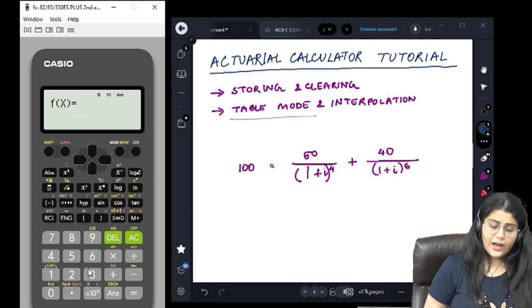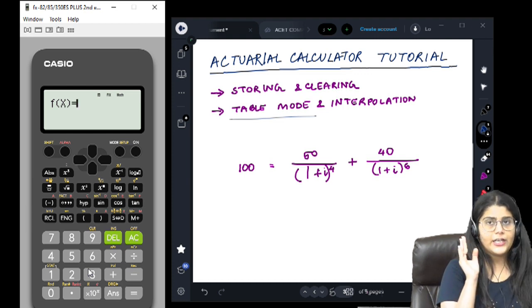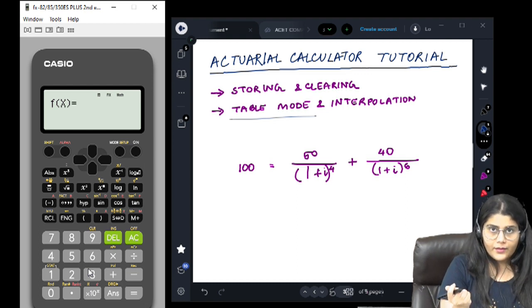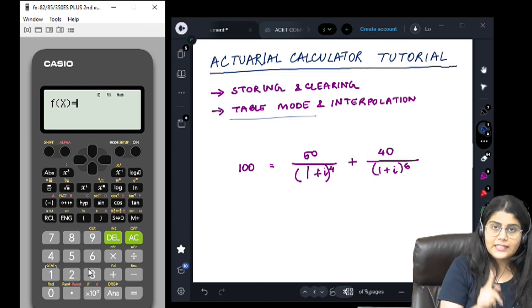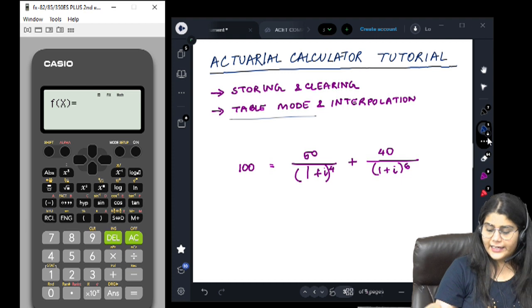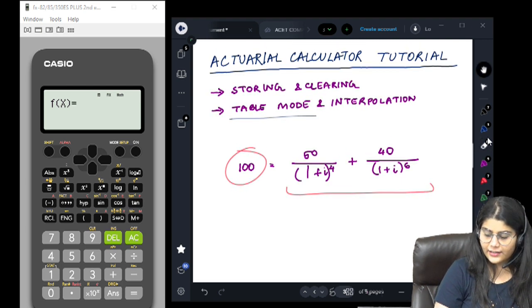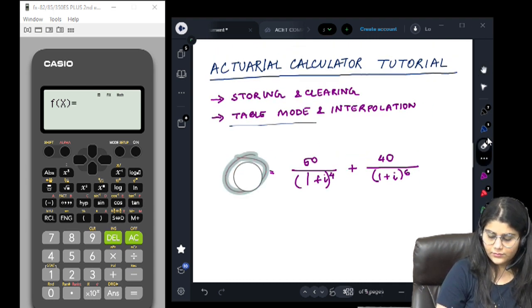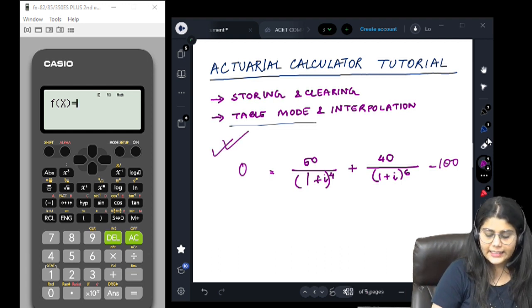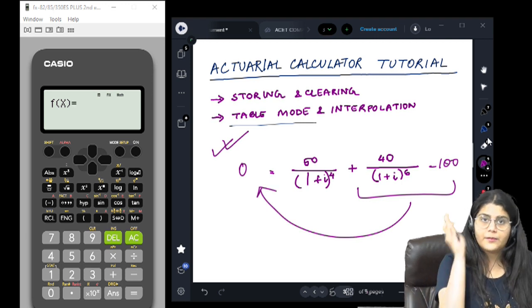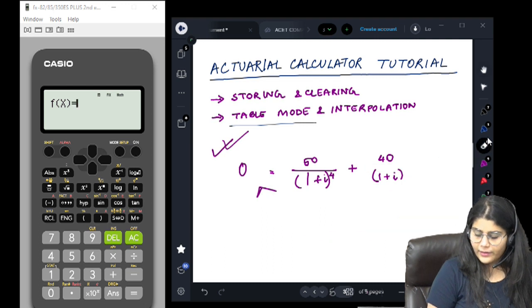Now for interpolation, we go into the table mode. Let's press 3 for table mode. What does the table mode do? It solves equations for us. Make sure whatever equation you want to solve, all the variable elements should be on one side. The constants can either be on the same side or on the other side. But one side has to be variable free. For example, in the example I have written: my constant is 100 on one side, and the variables are on the other side. I can write this as 100 minus 50 over (1+x)^4 minus 40 over (1+x)^6 equals 0. I am just taking the constant also on the same side. This is also acceptable.